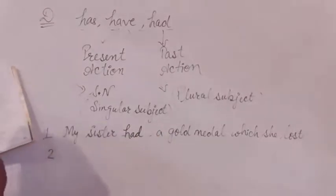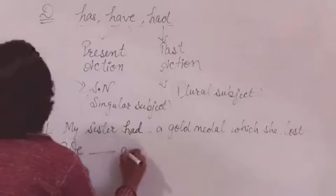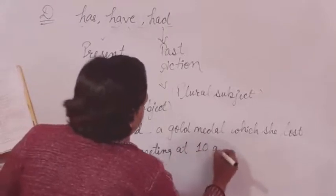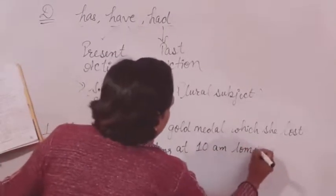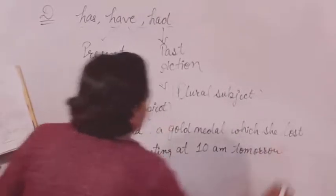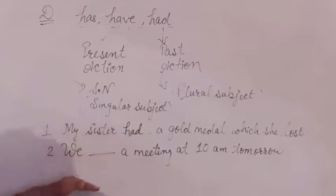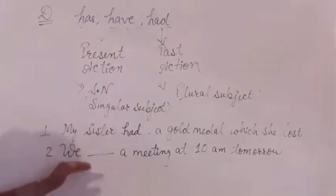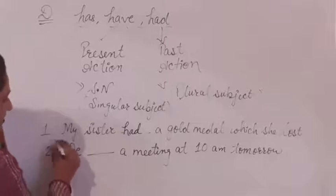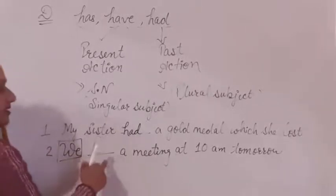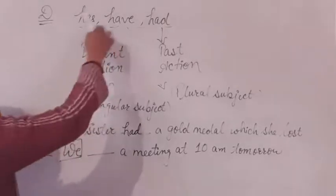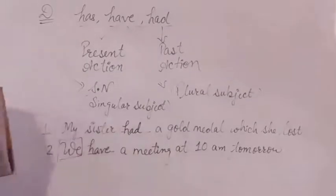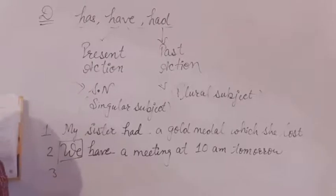Second: We blank a meeting at 10 a.m. tomorrow. This sentence is about a present action. The subject we is plural, and the tense is present, so we use have. The sentence becomes: We have a meeting at 10 a.m. tomorrow.